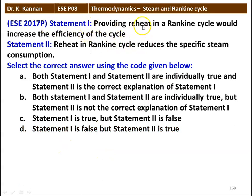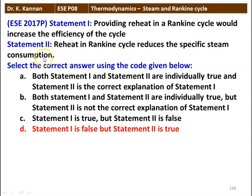Next question. Statement 1: providing reheat in a Rankine cycle would increase the efficiency of the cycle. Statement 2: reheat in the Rankine cycle reduces the specific steam consumption. The correct answer is option D: Statement 1 is false but Statement 2 is true. Reheat in the Rankine cycle reduces the specific steam consumption — this is true. Providing reheat in the Rankine cycle would increase the efficiency — this is not correct. Reheating will improve the work output of the steam turbine, but the net result on efficiency is not an increase in the efficiency of the cycle.